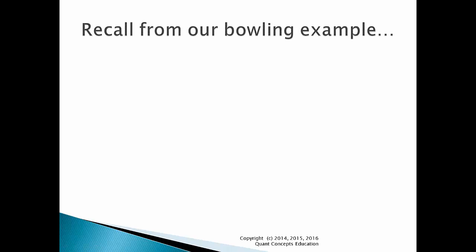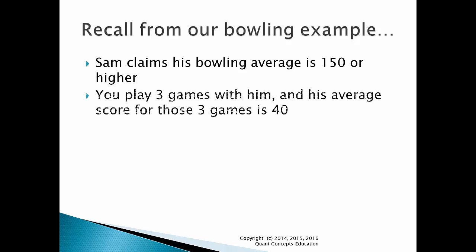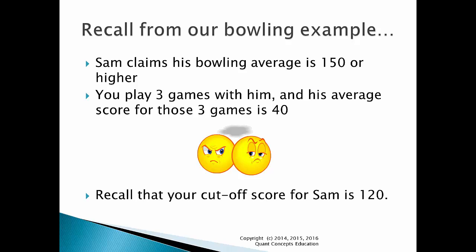Recall from the 10-minute YouTube clip that your friend Sam claimed that his bowling average is 150 or higher. You decide to play 3 games with him and his average for those 3 games is a dismal 40. Now Sam's claim of having an average of 150 or higher is sounding shady. Recall that your cutoff score for determining whether Sam's claim is a lie or not is 120. That is, if his average score when bowling with you is above 120, you will believe his claim. If it is below 120, you will conclude he is a liar.